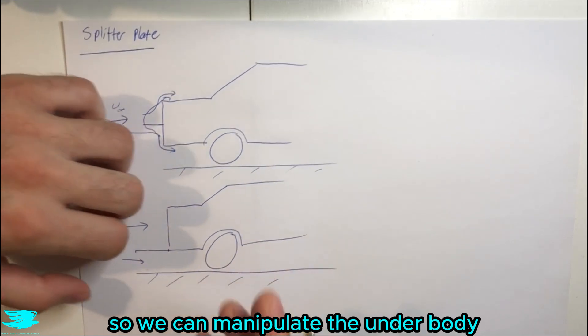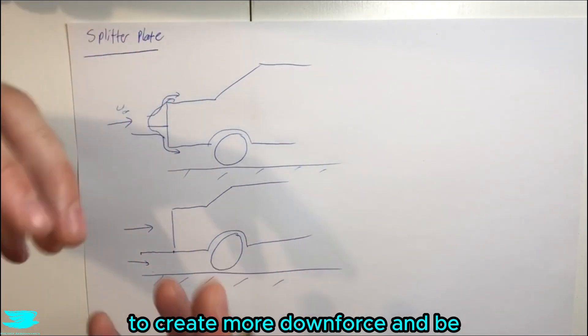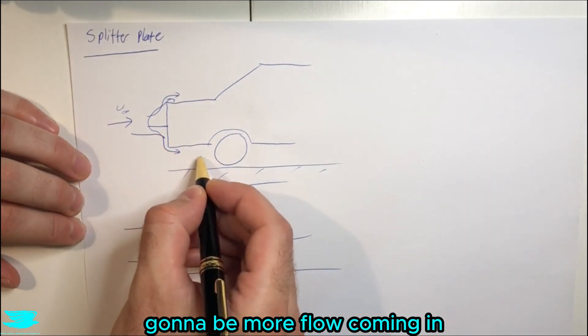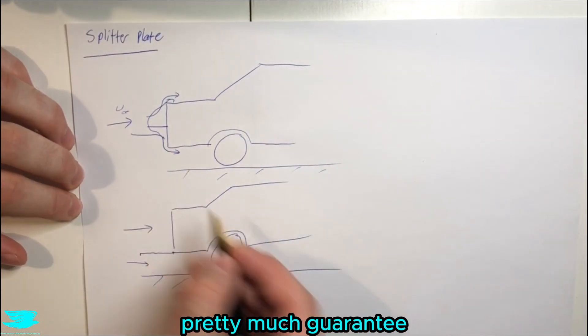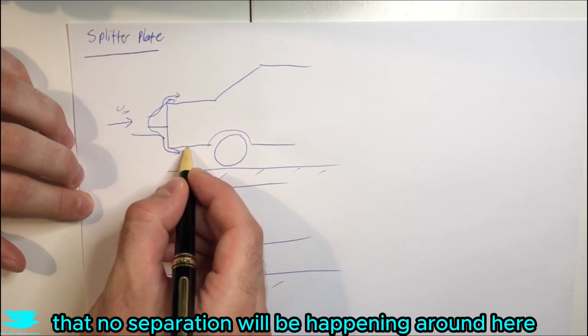So we can manipulate the underbody and put different things on the underbody to create more downforce and be assured that there isn't going to be more flow coming in and spoiling the situation. What's more, we can also pretty much guarantee that no separation will be happening around here.